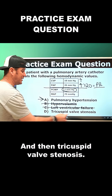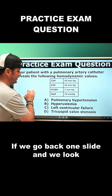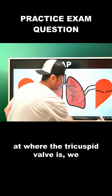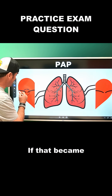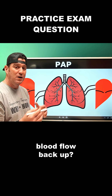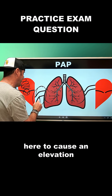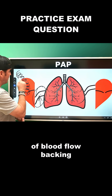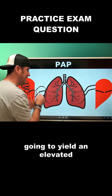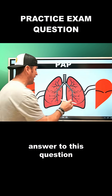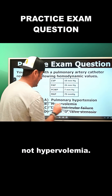It's not left ventricular failure, and then there's tricuspid valve stenosis. We have to remember where the tricuspid valve is. If we go back one slide, we know that it is on the right side of the heart — this is the tricuspid valve right here. If that became stenotic and more narrow, the blood would back up there. It would never get through to cause an elevation in pulmonary artery pressure. Blood backs up behind the tricuspid valve with only a little getting through, which would not yield an elevated pulmonary artery pressure. So the answer is not tricuspid valve stenosis, not left ventricular failure, not hypervolemia.